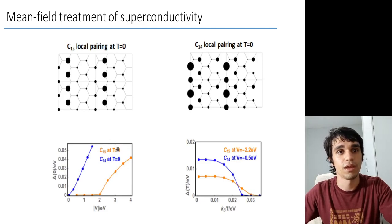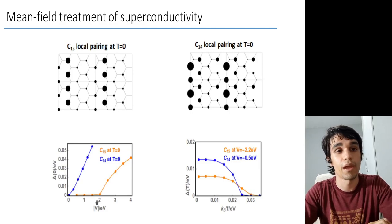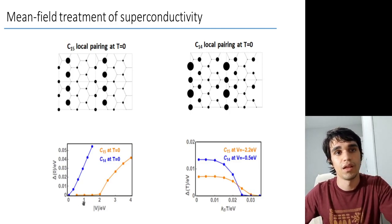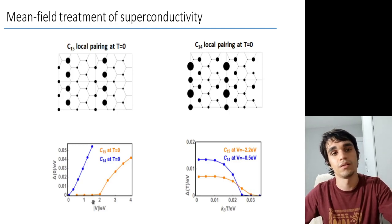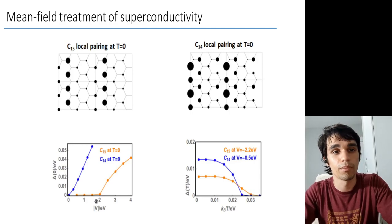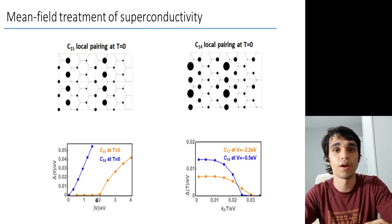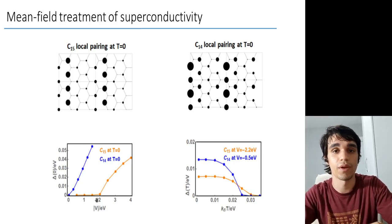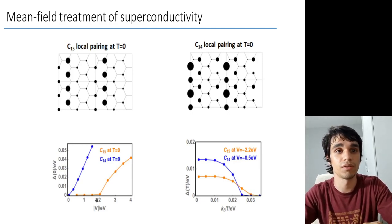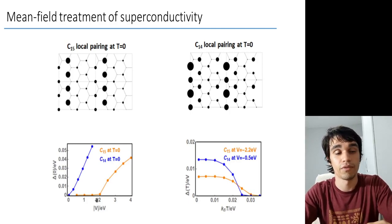And for the C15 case, we see that to open the gap, you need a pairing potential of the order of the hopping parameter, which means that it would require a very large electron-phonon interaction to support this superconducting phase.